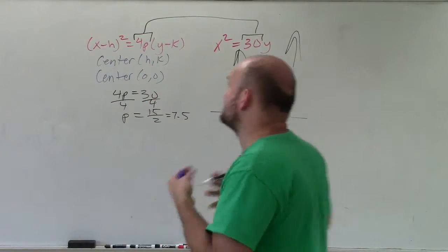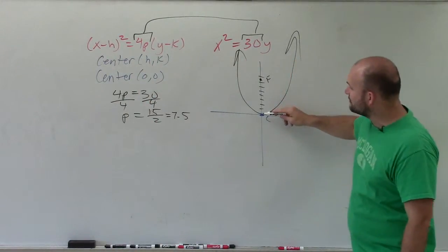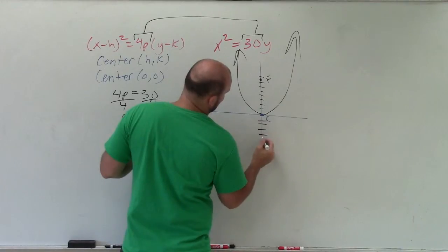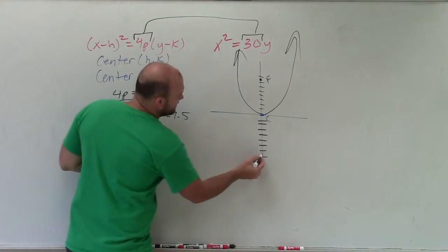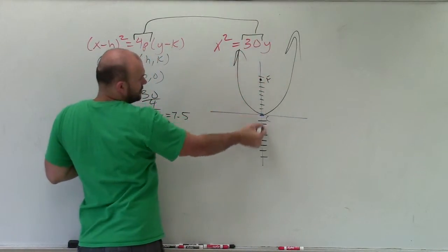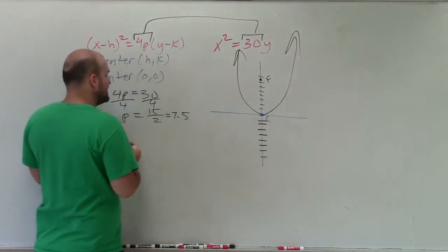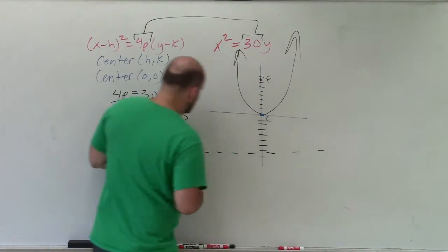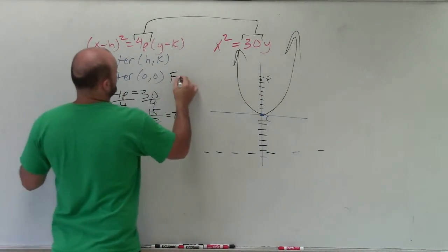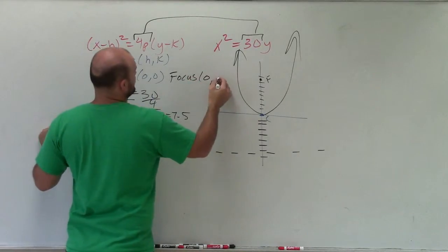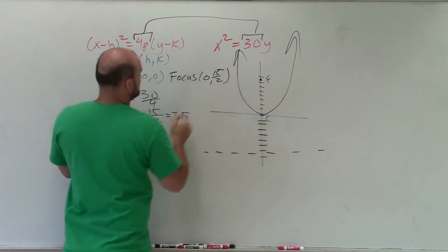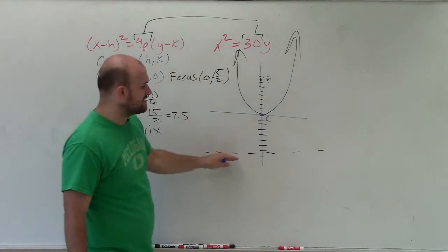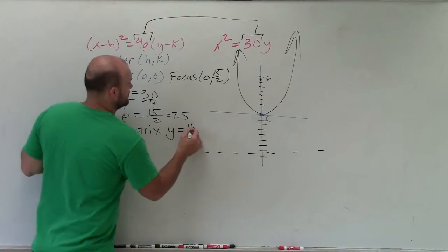Now to find the directrix: the directrix has the exact same absolute distance from the center as the focus, but in the opposite direction. So I go down 7.5 — 1, 2, 3, 4, 5, 6, 7, 8. The axis of symmetry is along the y-axis, which is vertical, so the directrix is horizontal — it's perpendicular to the axis of symmetry. The focus is at 0 comma 15 halves, and the directrix is the horizontal line y equals negative 15 halves.